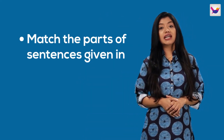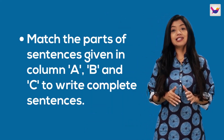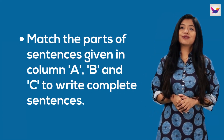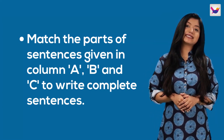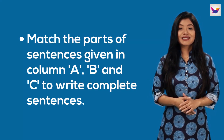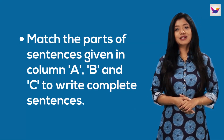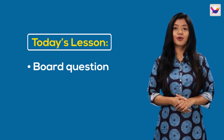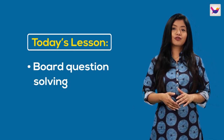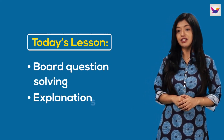Hello, dear students. In the English first paper, there is a problem solving in English. There are three columns in question A, B and C. In the last episode, we solved board questions. In today's episode, we have solved board questions and we have a proper explanation for them.